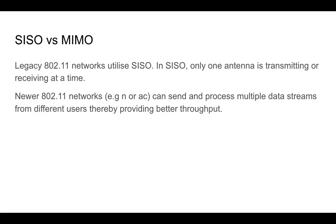Now let's talk about single input single output (SISO) and multiple input multiple output (MIMO). Most access points on the market today are multi-user MIMO. SISO was used by a lot of legacy Wi-Fi technologies — in SISO, one antenna is responsible for transmitting or receiving at a time. In the newer 802.11 networks such as 802.11n, ac, or ax, you can send and process multiple data streams from multiple users using your antennas, which gives much better throughput. Typically those access points also have multiple antennas in them.